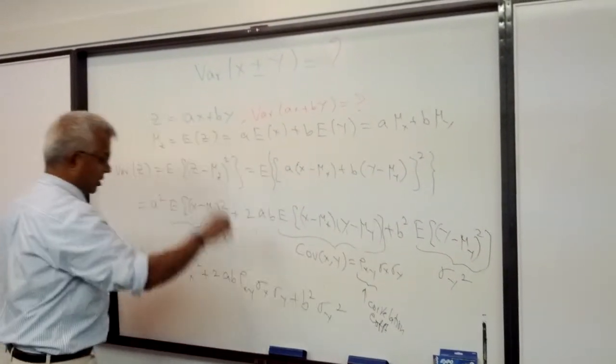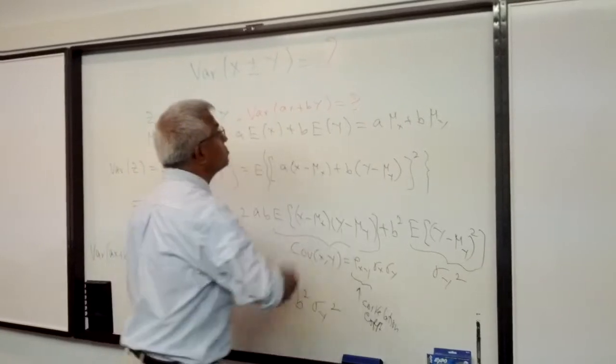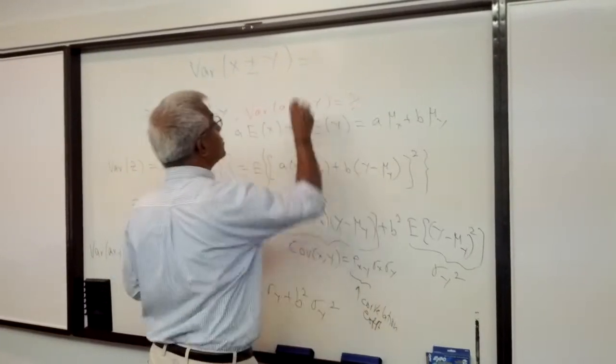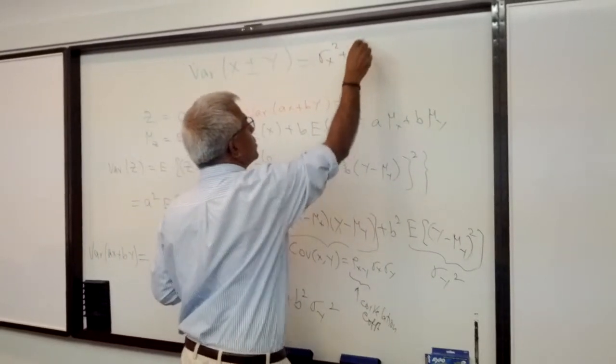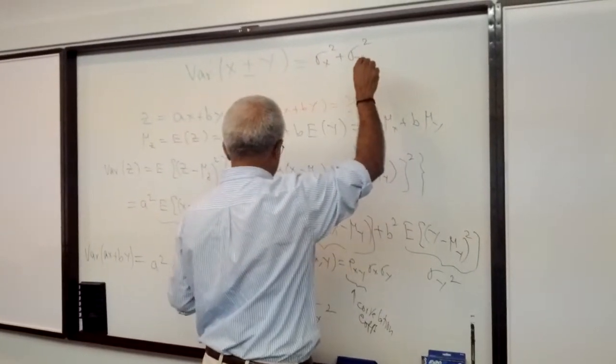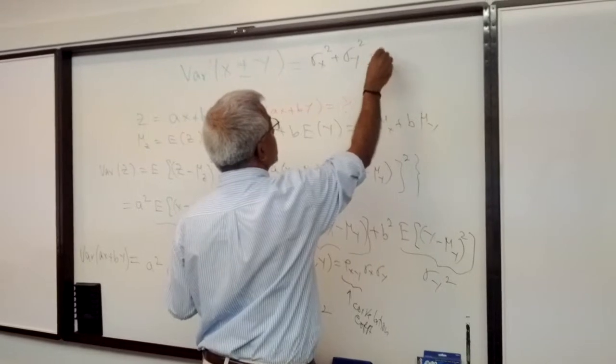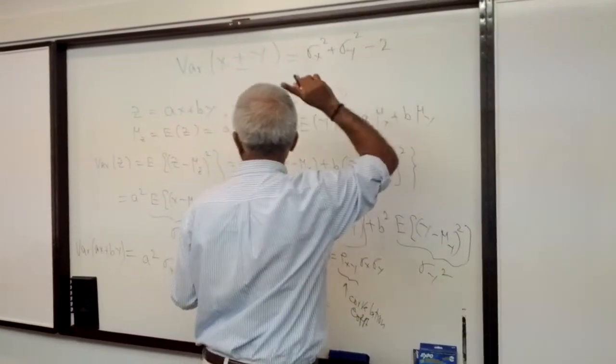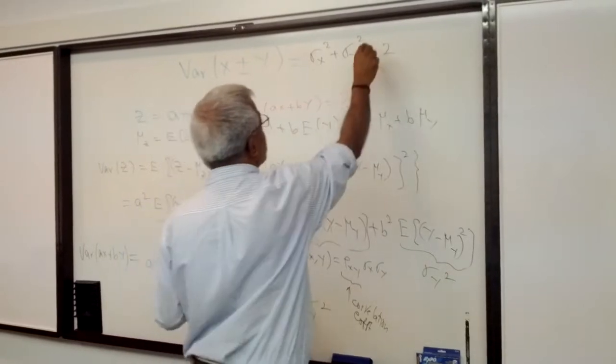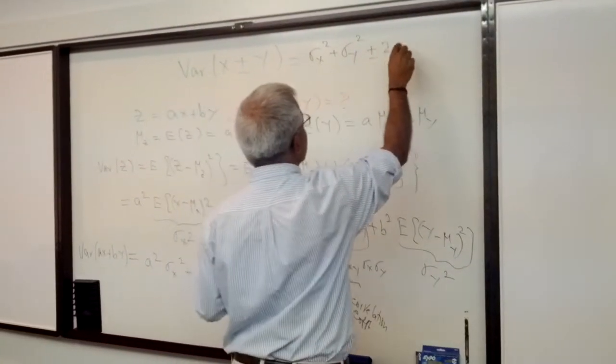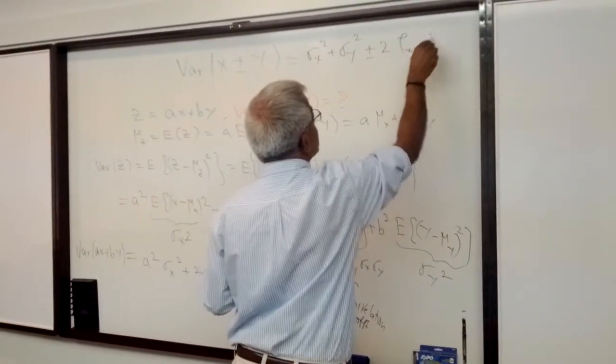So of course if A and B are 1 or plus minus 1, we get the answer to be Sigma X squared plus Sigma Y squared, depending on A and B, plus or minus 2 Rho XY Sigma X Sigma Y.